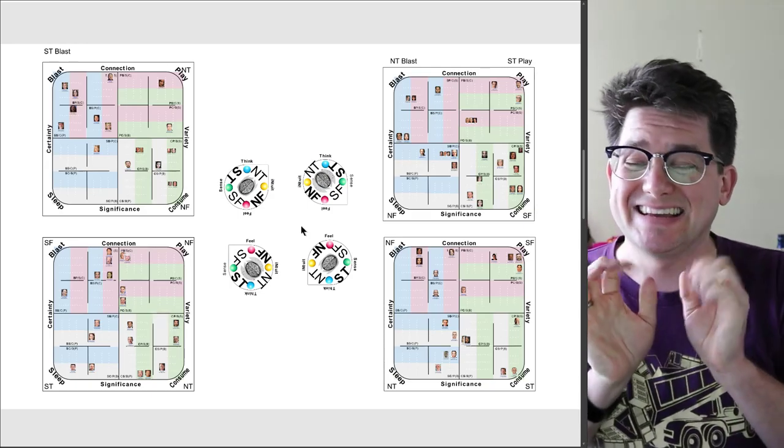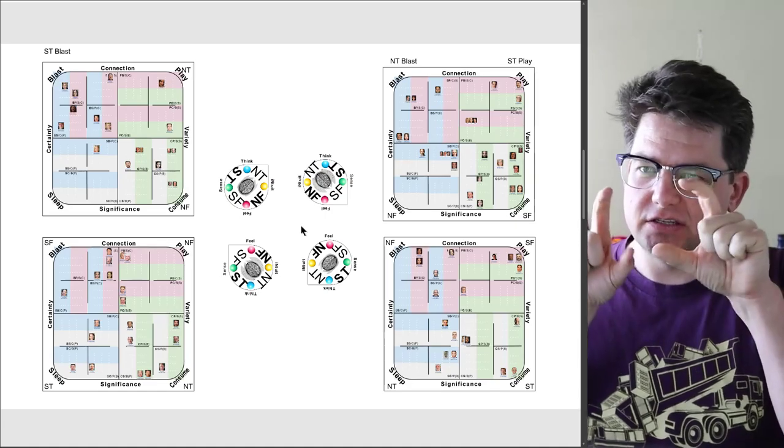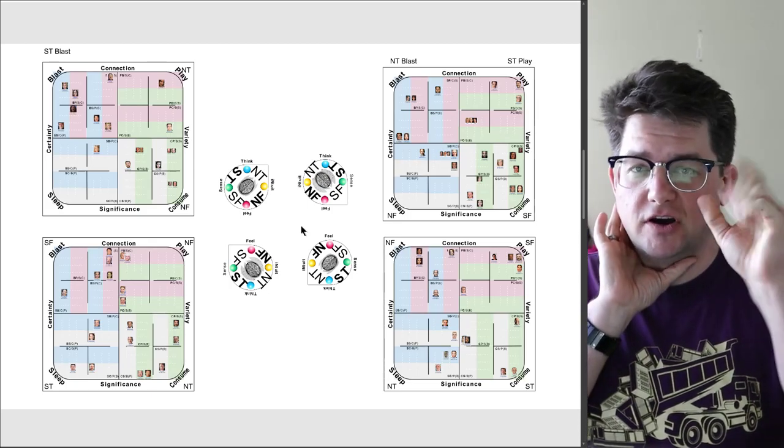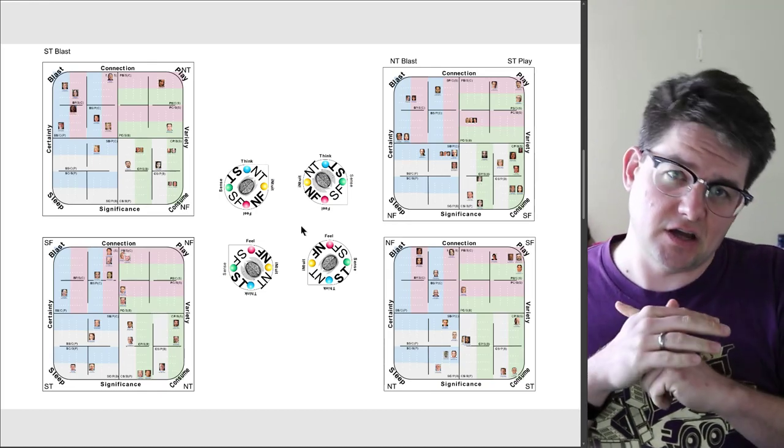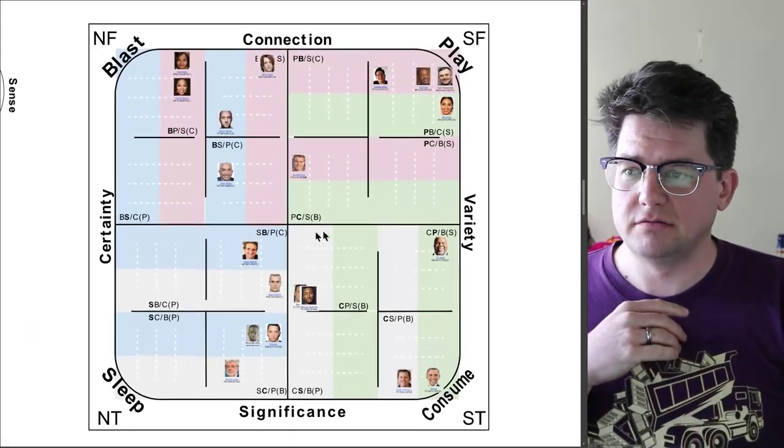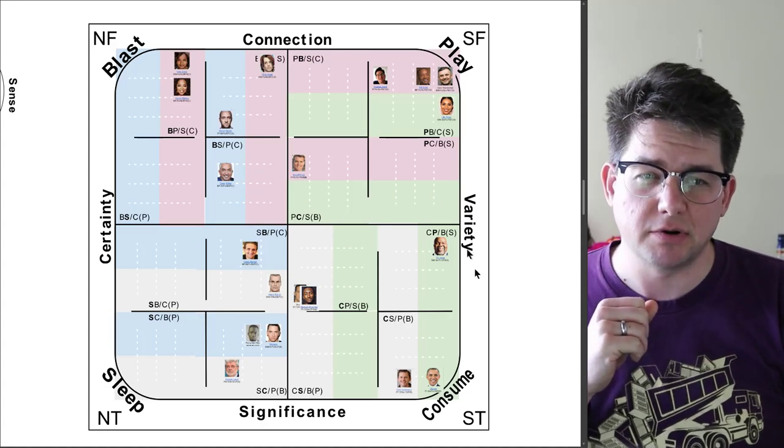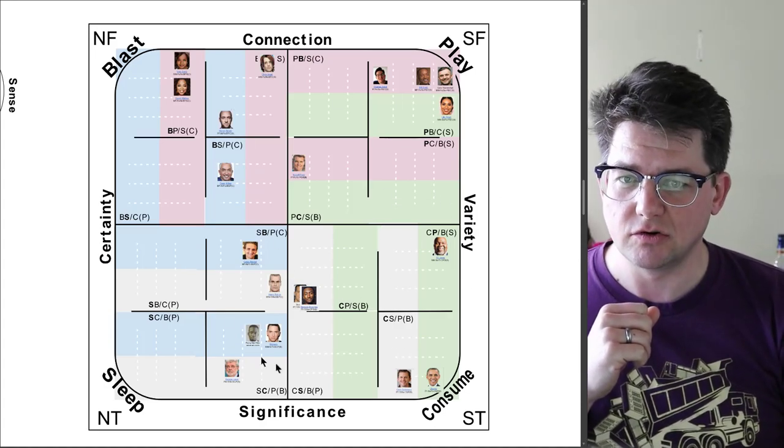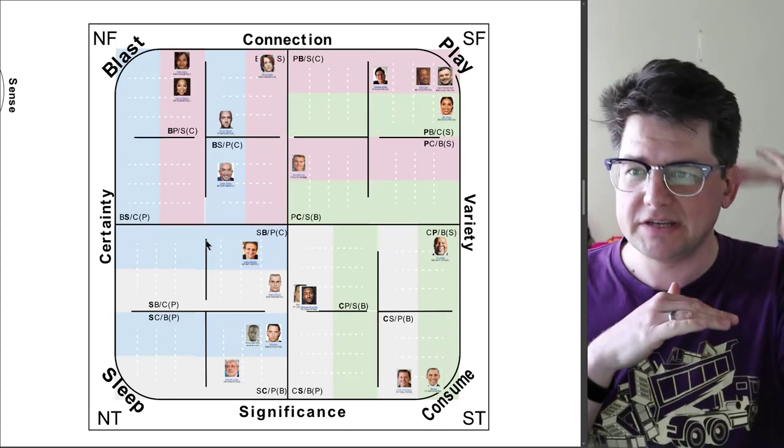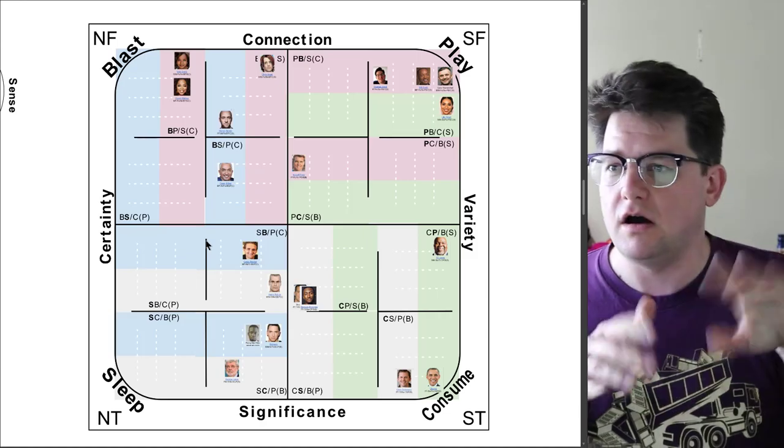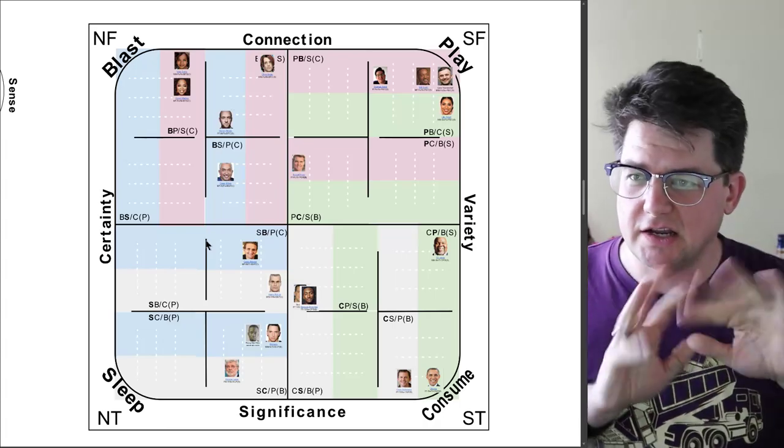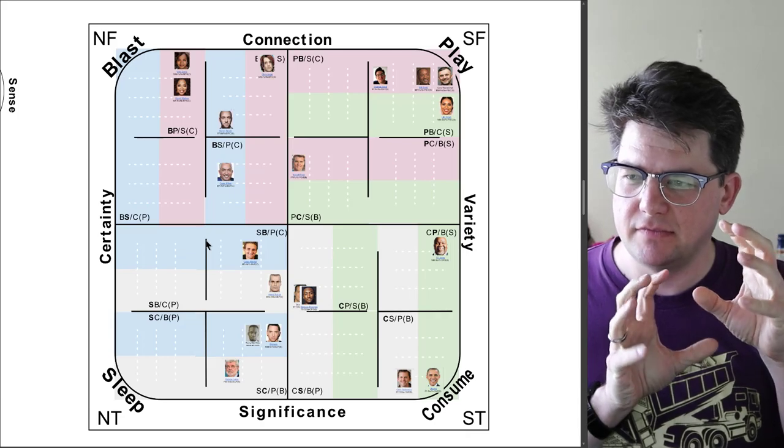Which basically means that in each of these four different groups, everybody in that group has the same function stack. For example, FE TI SE NI. So every single person in this group, every single possible personality type in this group have the same exact functions. They're just ordered in a different way and hooked up in a different way. But it's the same functions. All of these people have FE, all of these people have SE, etc. Just in a different order, different magnitude, different grant stack. But it's all the same parts. Same basic parts.